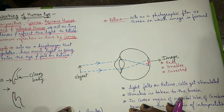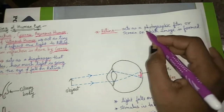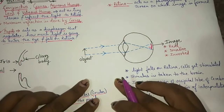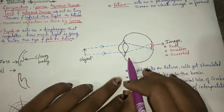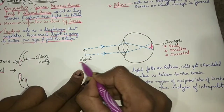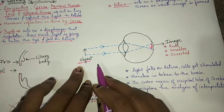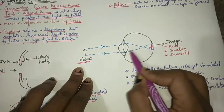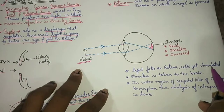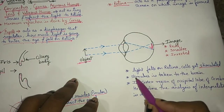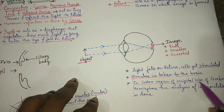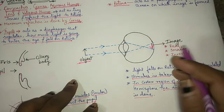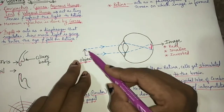The retina acts as a photographic screen on which the image is formed. Light from an object falls on the lens first, then is directed onto the retina, where the rod and cone cells get stimulated. This stimulus is taken to the brain — specifically to the cortex region of the occipital lobe of the cerebral hemisphere — where analysis and interpretation of the image take place.